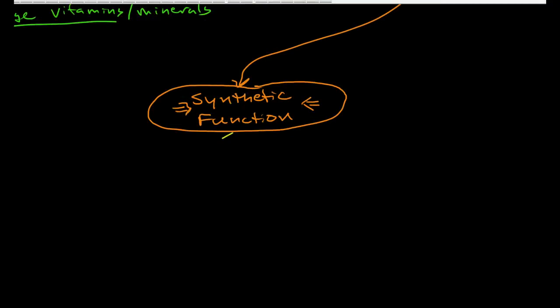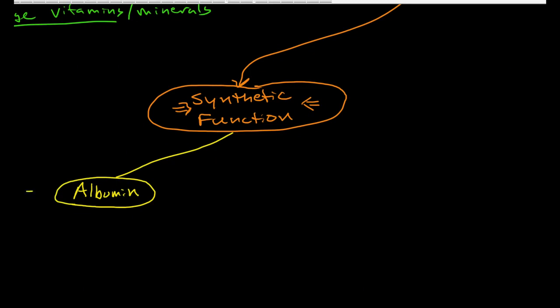When we talked about the hematologic system, we talked about how blood has a lot of proteins, and those proteins are very important to the function of the circulatory system because they produce what's called oncotic pressure, which enables blood to be pulled back into the capillaries at the venous end. Albumin is very important to the function of the circulatory system and also has carrier roles. In the bloodstream, about 70% of all proteins are albumin.